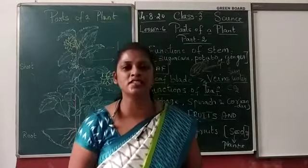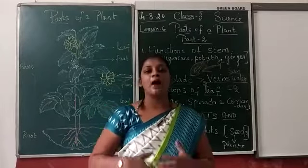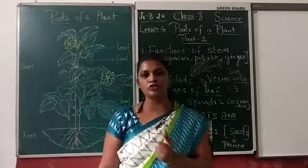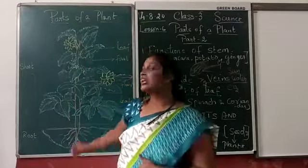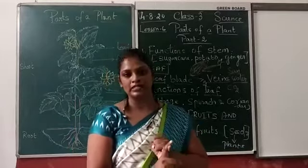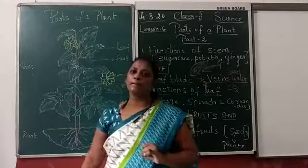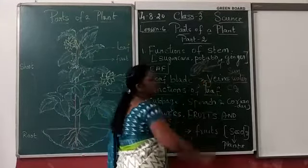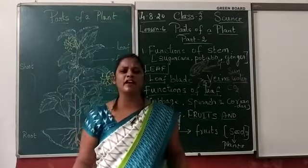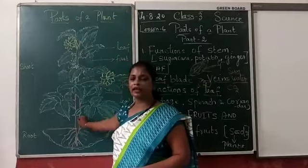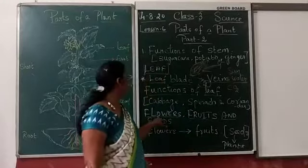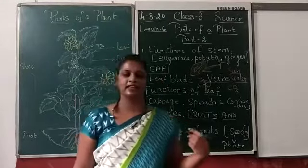That oxygen is given by the leaf. Leaf, Photosynthesis के process के द्वारा अपने तरीके से food prepare करते हैं। वो plant को भी देता है। And this process is called Photosynthesis. Kitchen of the plant is called leaf. Leaf is called food factory or kitchen of a plant. It gives food to all parts of the plant and it also gives oxygen to us. Dekha kitna fayda hai leaves ka. अब flowers, fruits, and leaves के बारे में भी देखते हैं।